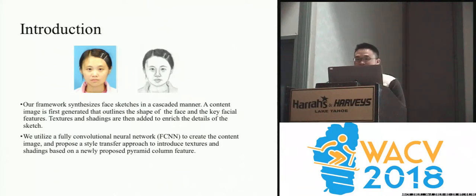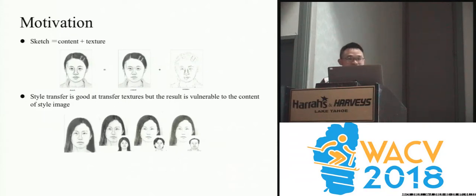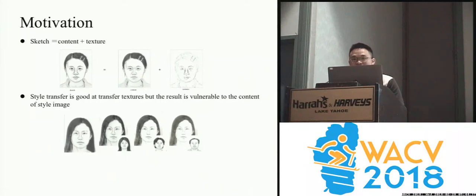First, a content image is generated by a convolutional neural network, and then we transfer the textures and shadings to the content image through neural style transfer. Our motivation is that we consider a sketch as a content image plus sketch details. The content image is basically very smooth — it captures the smooth content of the RGB photo without details in the highlights and shadows.